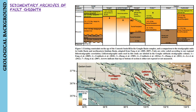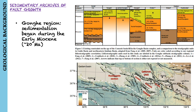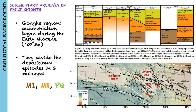Now let's see the evidence for fault growth in this region based on previous studies. Based on magnetostratigraphic and lithostratigraphic analysis of well-exposed sedimentary sections, sediment accumulation began during the early Miocene at around 20 million years ago across the Gonghe region. They divided the depositional episodes since the early Miocene into three packages called M1, M2, and PQ as shown in Figure 3.